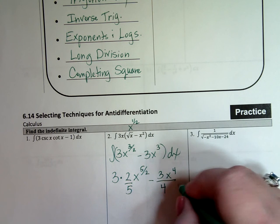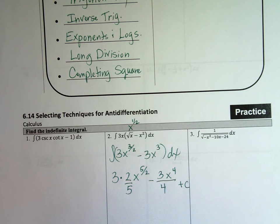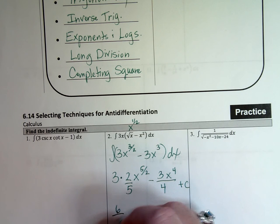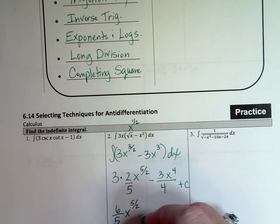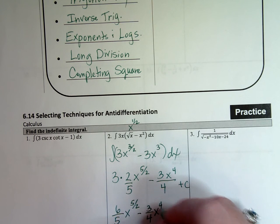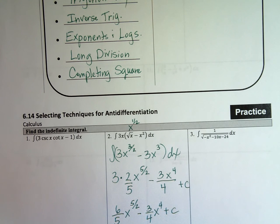And then I'm going to have a plus c because I don't have bounds on this guy. Can I make that prettier? Absolutely pretty is good. 6/5 x to the 5½ minus 3/4 x to the 4th plus c. That's my final answer. So sometimes distributing through that piece makes your answer or your integral a little easier to take.